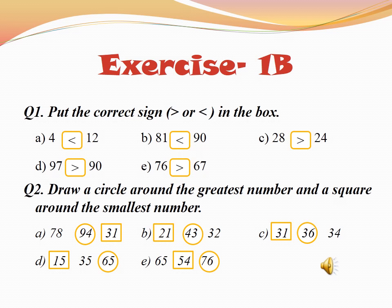In part D, the numbers are 15, 35, and 65. Which number is the greatest? Draw a circle around that. Yes, 65 is the greatest number, so draw a circle around 65. And which is the smallest? 15 is the smallest number, so draw a square around 15.